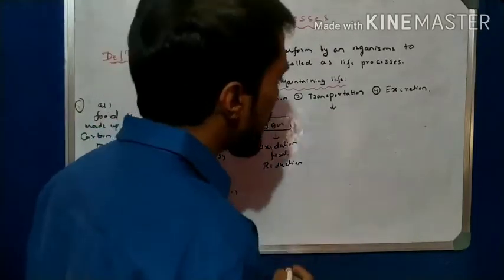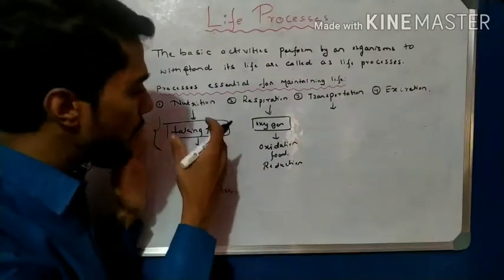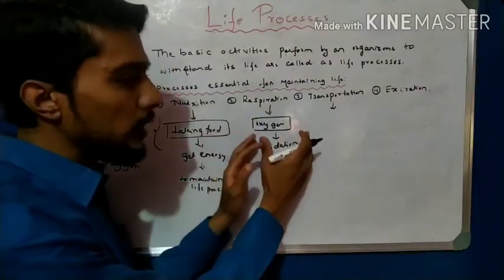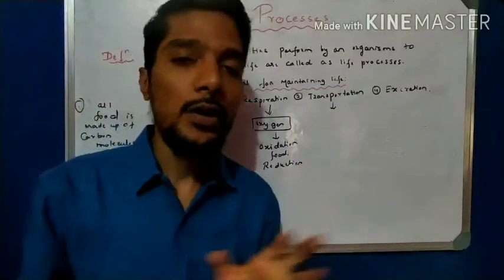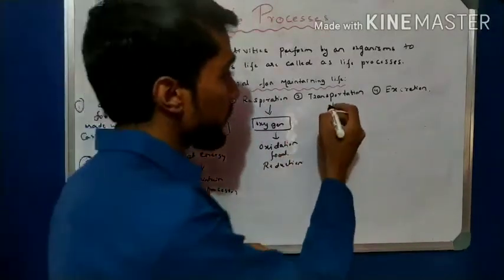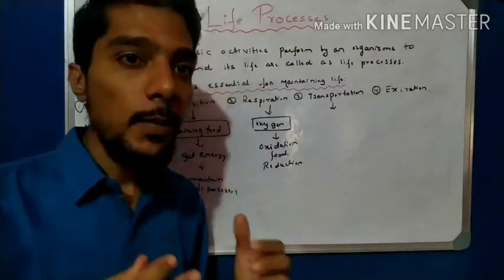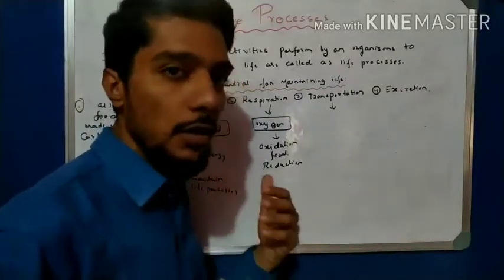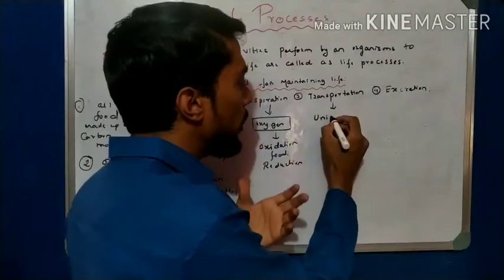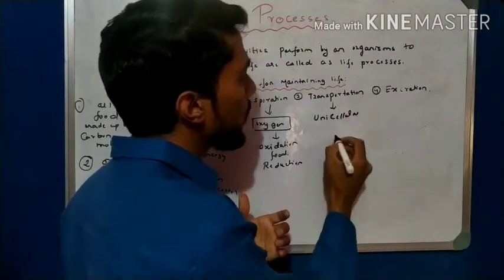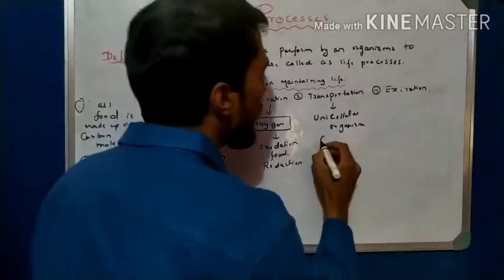Transportation is the combination of respiration and nutrition. When we absorb and take food, energy is formed using oxygen. That energy is transported to every part of the body — that is called transportation. Transportation is done by blood in higher organisms. In lower unicellular organisms, transportation takes place by the diffusion process.